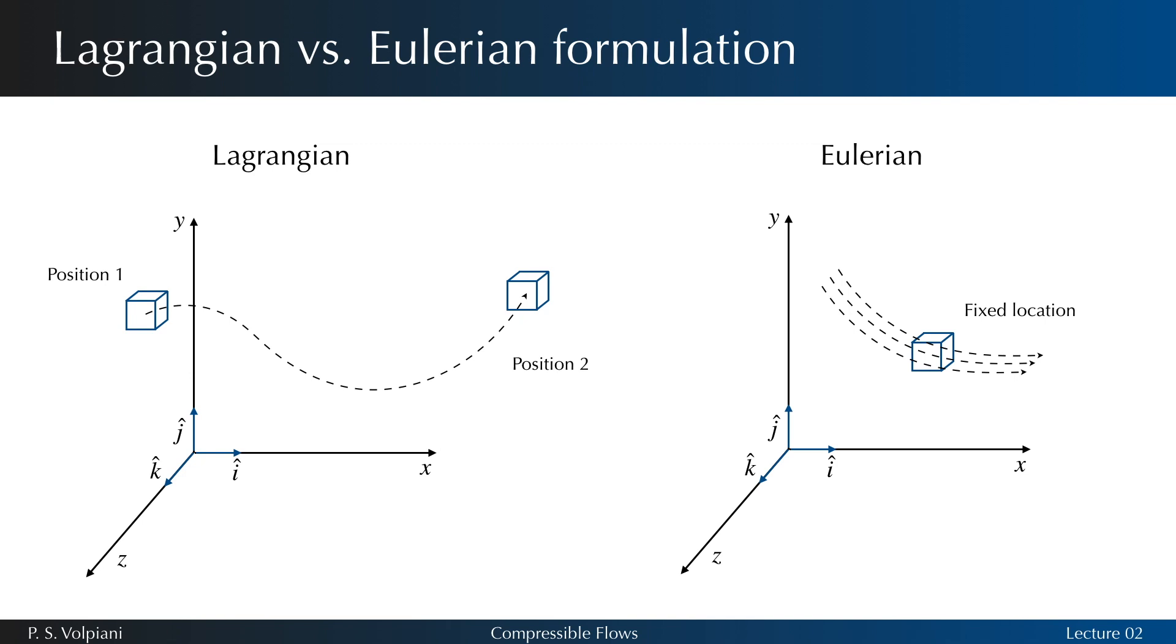Based on these two descriptions, changes in fluid properties can be measured either on a fixed point in space while fluid particles are crossing it, or by following a fluid parcel along its path.